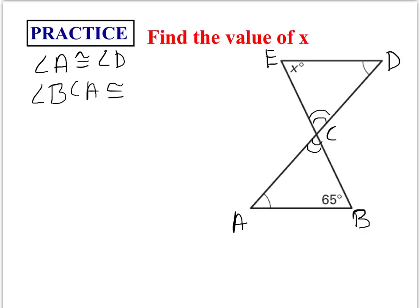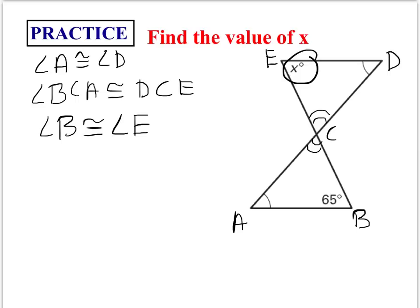Since we already have two pairs of congruent angles, the Third Angles Theorem tells us angle B must be congruent to angle E. So if angle B is 65 degrees, then angle E — which is expressed as X — must equal 65 degrees. That makes solving for X straightforward.